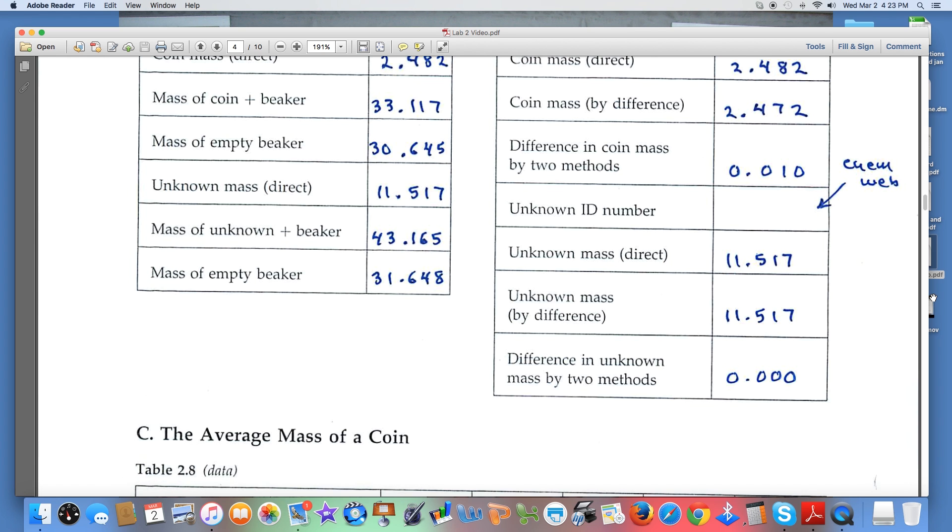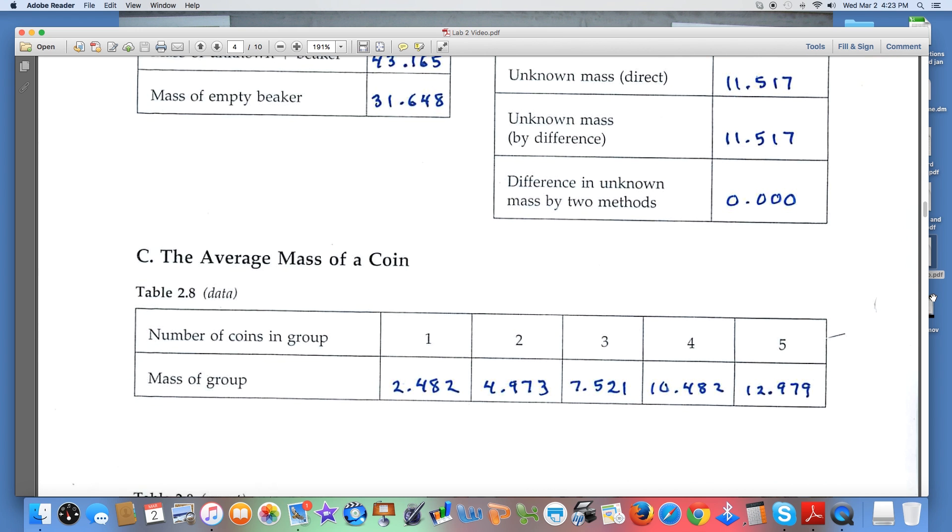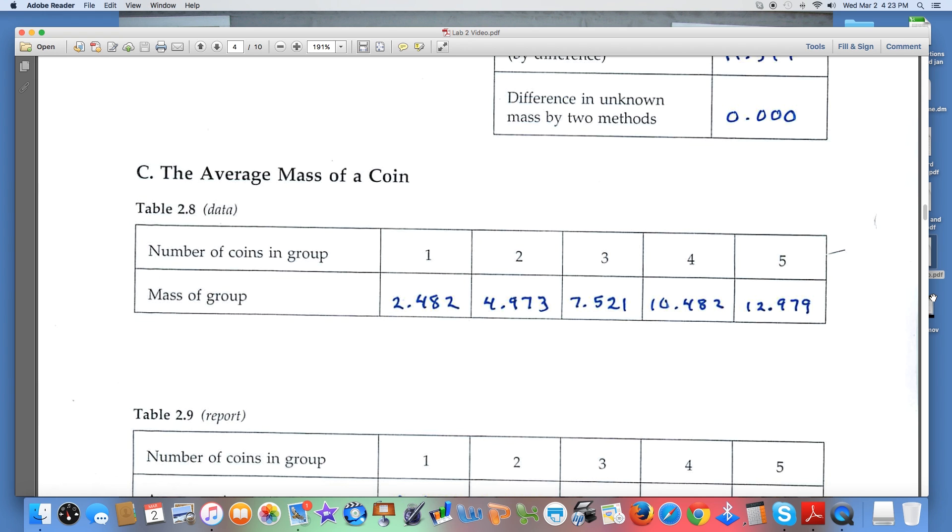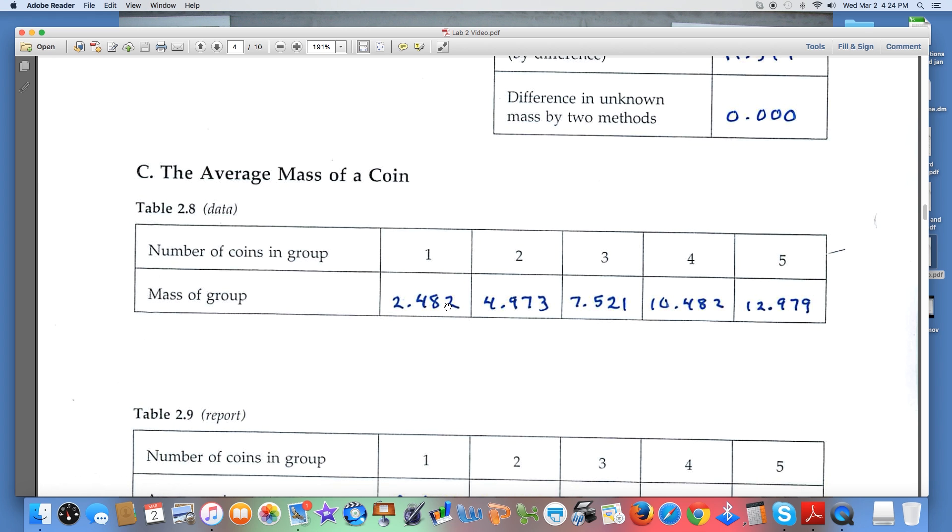Part C deals with the average mass of a coin. We're weighing groups of coins: 1, 2, 3, 4, and 5 coins. I've recorded some hypothetical numbers, you'll have different numbers, don't use these. Notice as we get ready to calculate the average, we'll be dividing the mass by the number of coins in that group. So 4.973 divided by 2, we follow rules for significant figures. The number of coins are exact numbers with infinite significance, so it's these masses that will determine how many significant figures are in the answer. Here's something interesting: when I weigh one, two, three coins, the total mass has four significant figures, but when I get over to four and five, I've jumped to five significant figures, so you're going to reflect that.